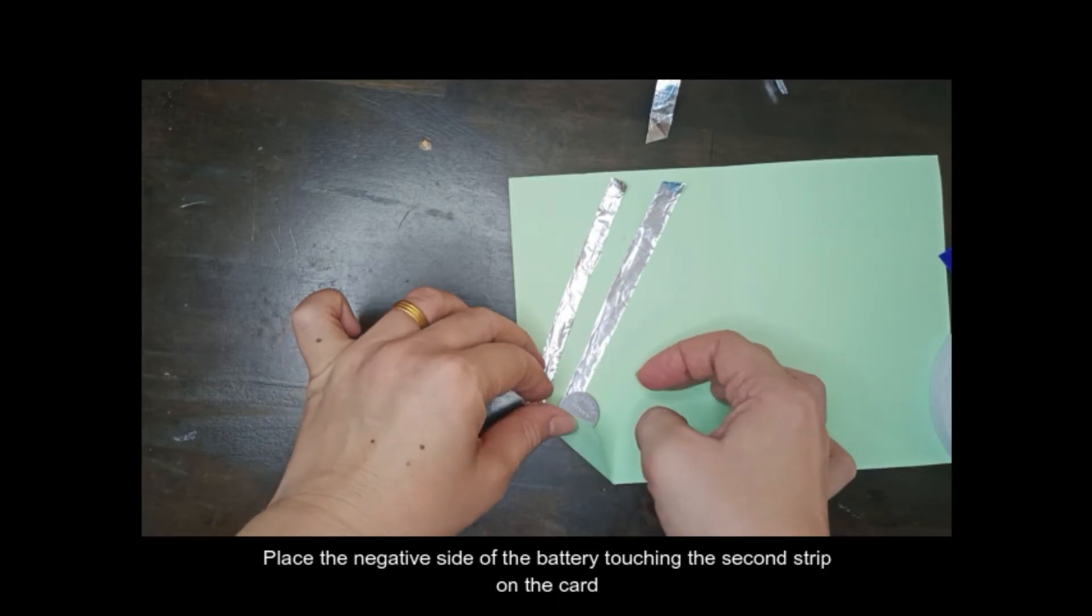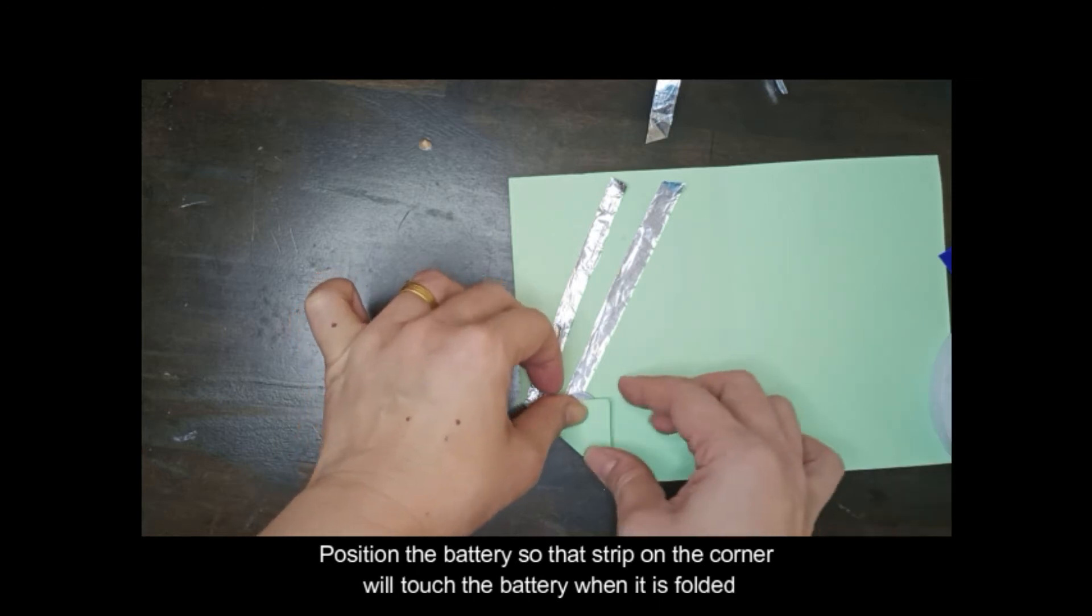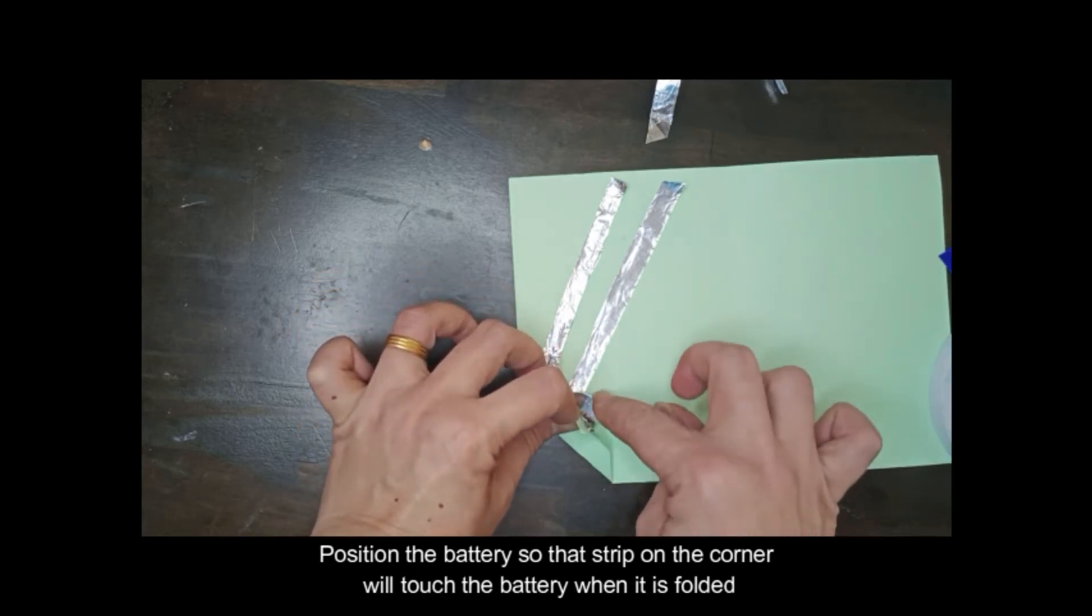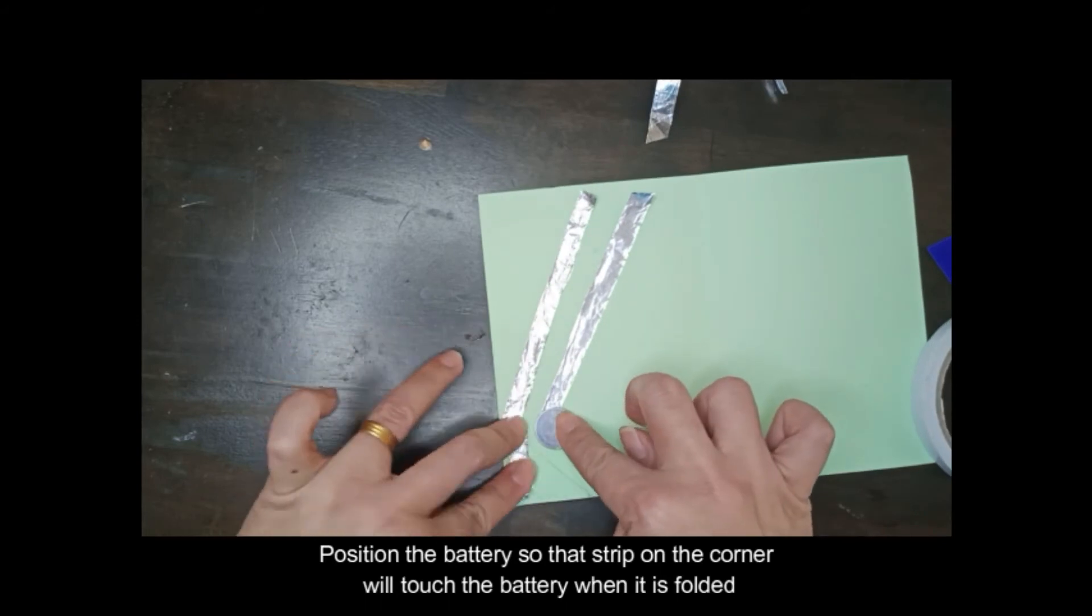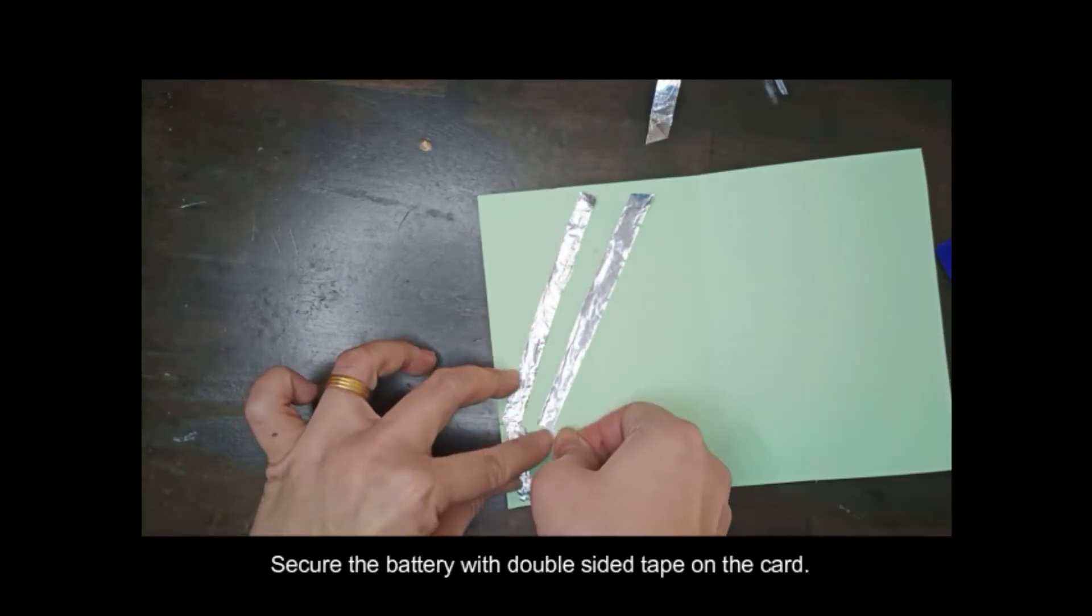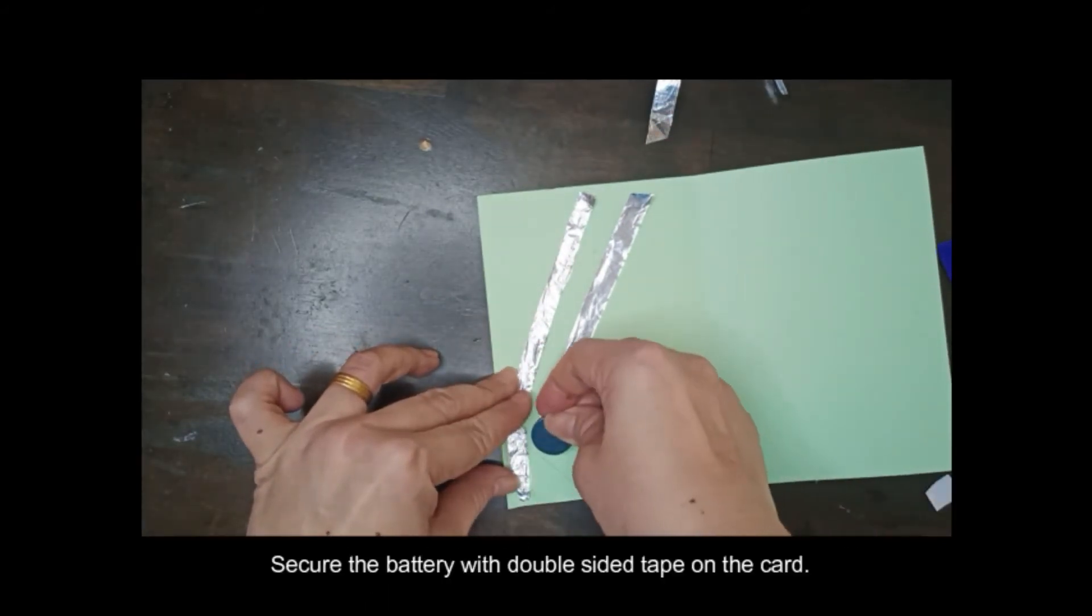Place the negative side of the battery touching the second strip on the card. Position the battery so that the strip on the corner will touch the battery when it is folded. Secure the battery with double-sided tape on the card.